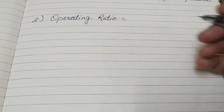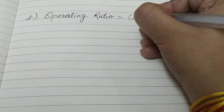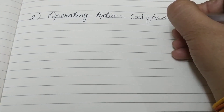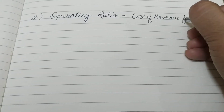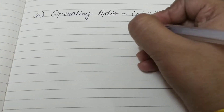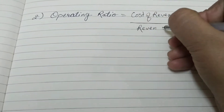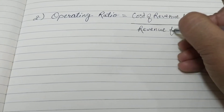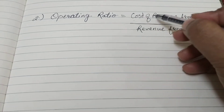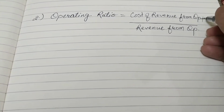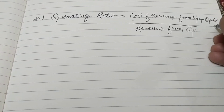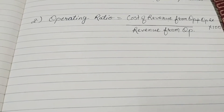The formula of the operating ratio is: cost of revenue from operations plus operating expenses, upon revenue from operations, multiplied by 100. It comes out as a percentage.